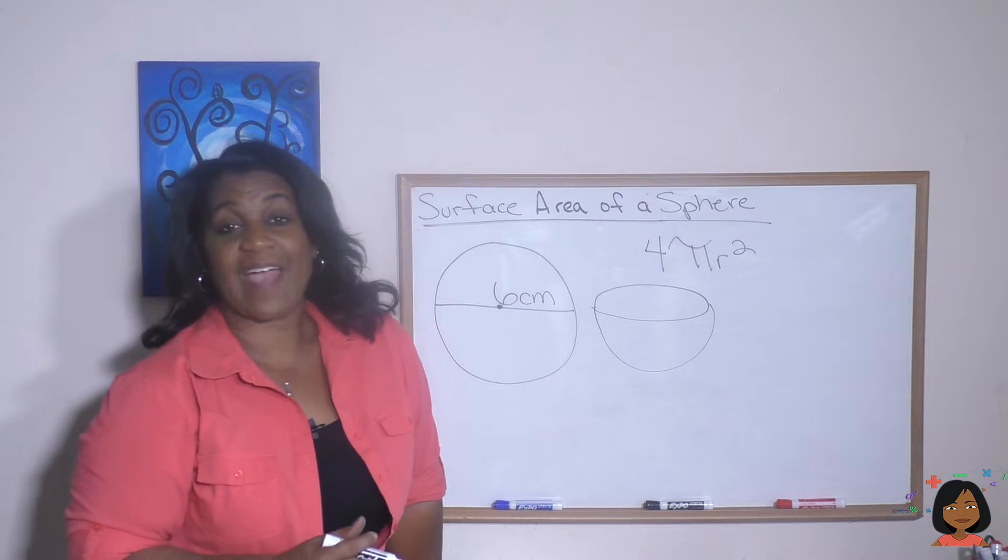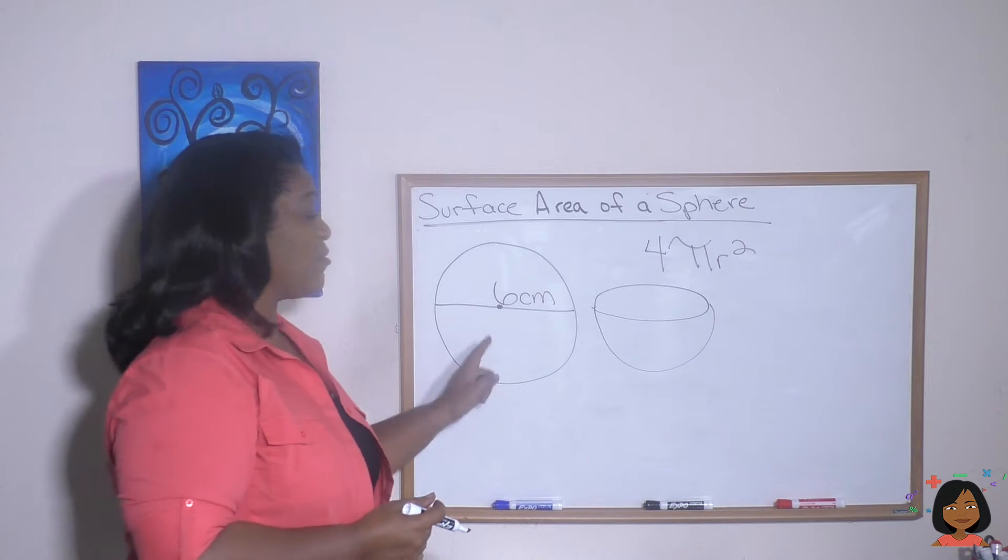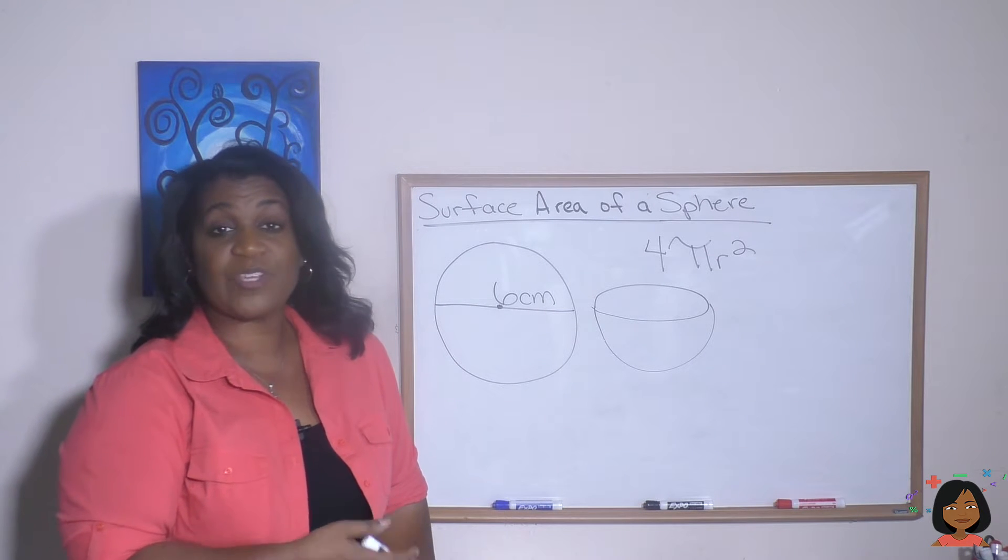So let me give you an example. Here I have a sphere that has a diameter of six centimeters. Let's use this information to figure out the surface area.